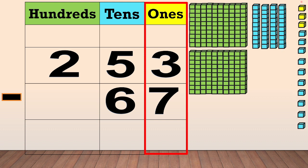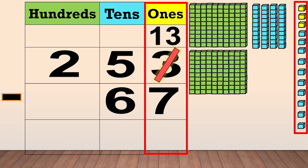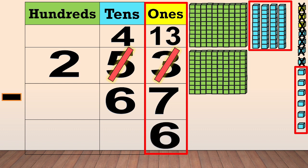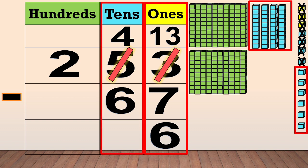Now we have 13 ones. We cross out the three and write 13 as new ones. Now we only have four tens — we cross out the five and write four at the top. Next, we subtract the ones: 13 minus seven equals six. Then we subtract the tens: four minus six — we cannot subtract six from four.